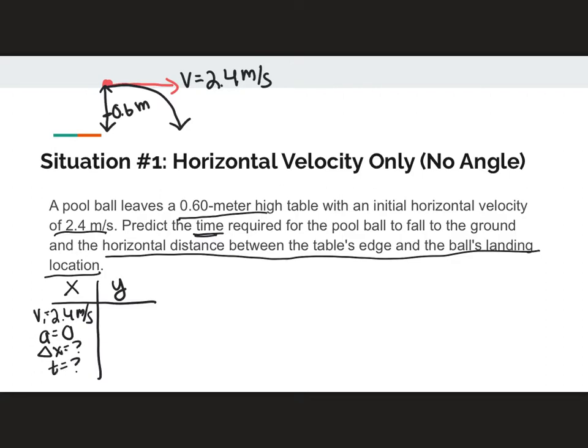For my Y, I know a few things. My velocity initial is 0. It's only being launched horizontally. My acceleration is negative 9.8 meters per second squared. And finally, my delta Y is negative 0.6 meters. What can I find in this side? Time. As a reminder, time is always the same in the X and Y. So once I find time on one side, I'm going to use it on the other side.